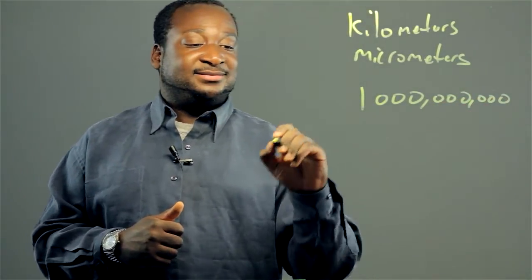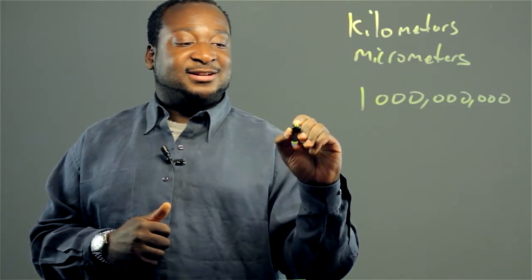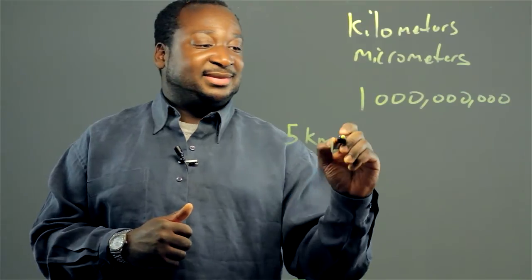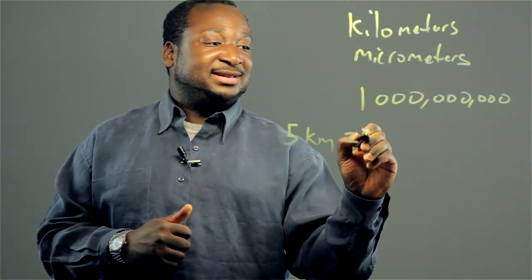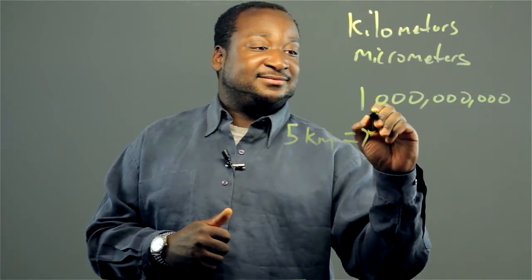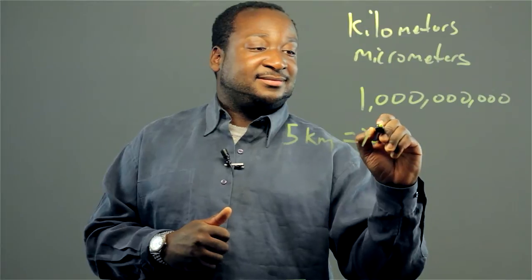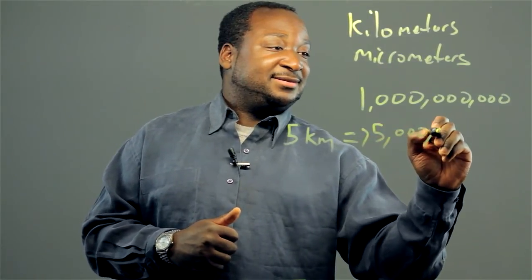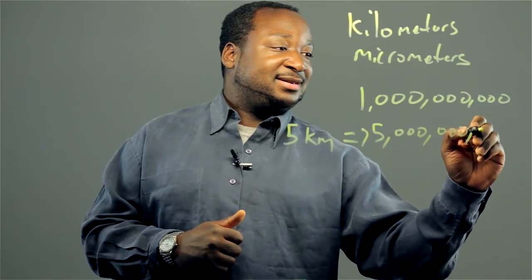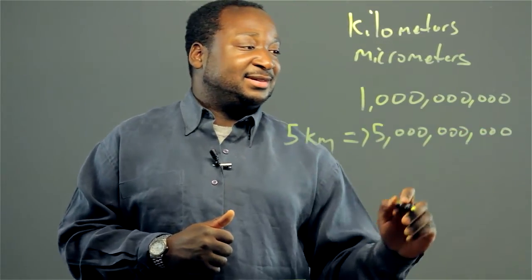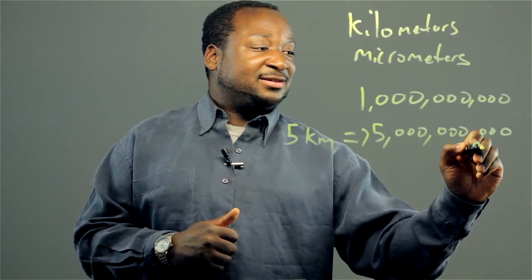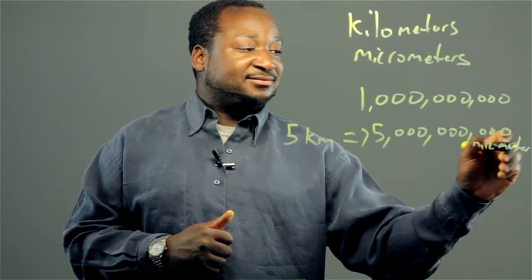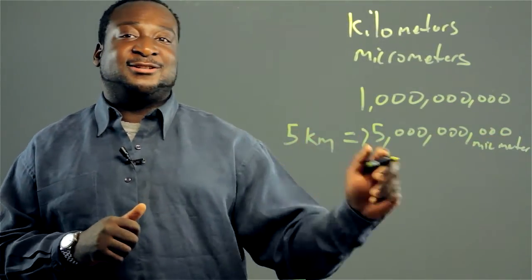So, here's a large number — 5 kilometers — that's equivalent to, here's a big number, 5 — 1, 2, 3, 1, 2, 3, 1, 2, 3 — micrometers. And there's a conversion.